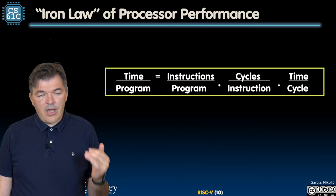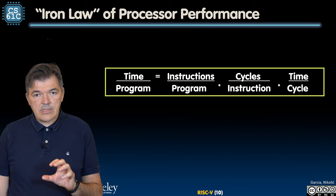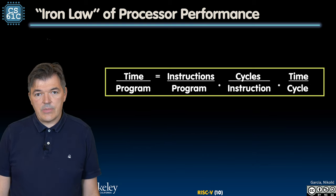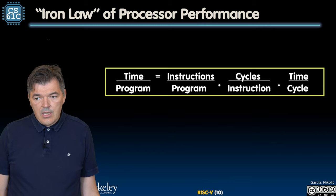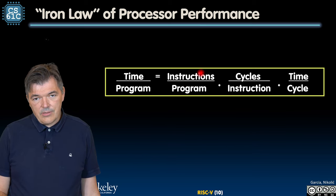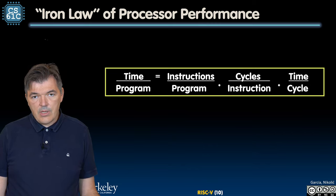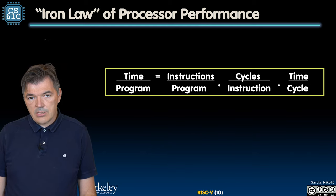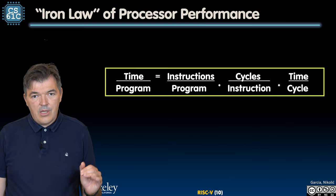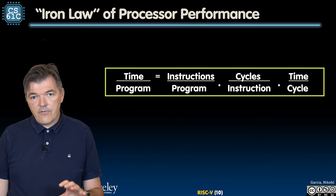There is something we call the Iron Law of processor performance, which tells us how long it takes to execute a program based on some basic parameters of the machine and the program being executed. Time to execute the program is equal to the number of instructions in the program, multiplied by the number of cycles per instruction, and the time to execute one cycle. This is now a lot easier to break down and understand the fundamental parameters that affect each of these.